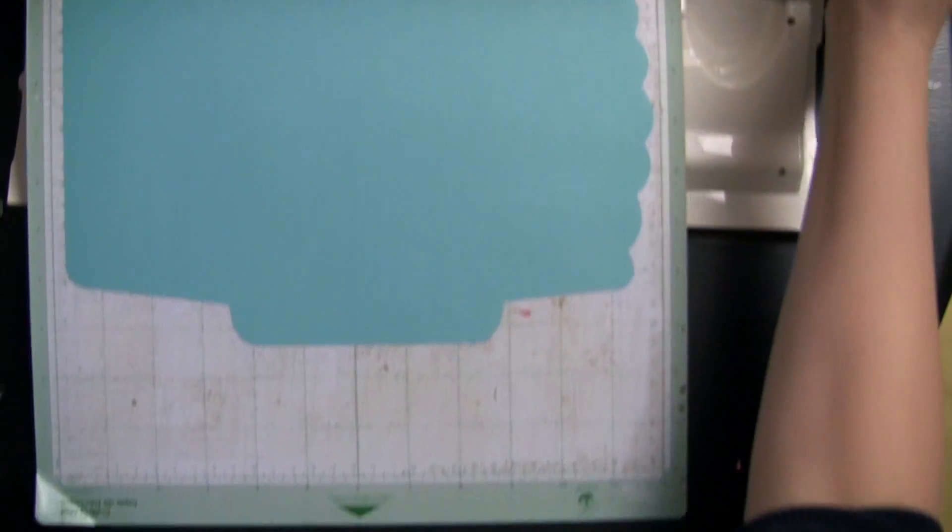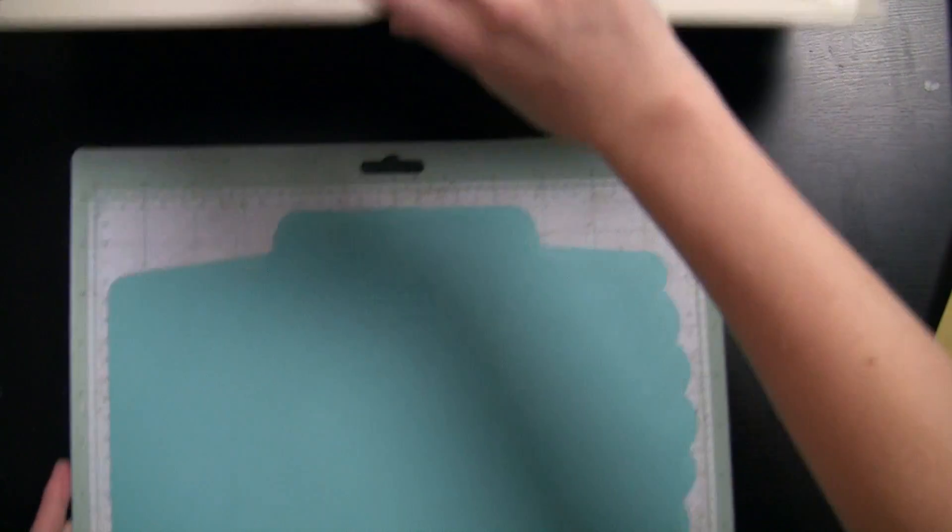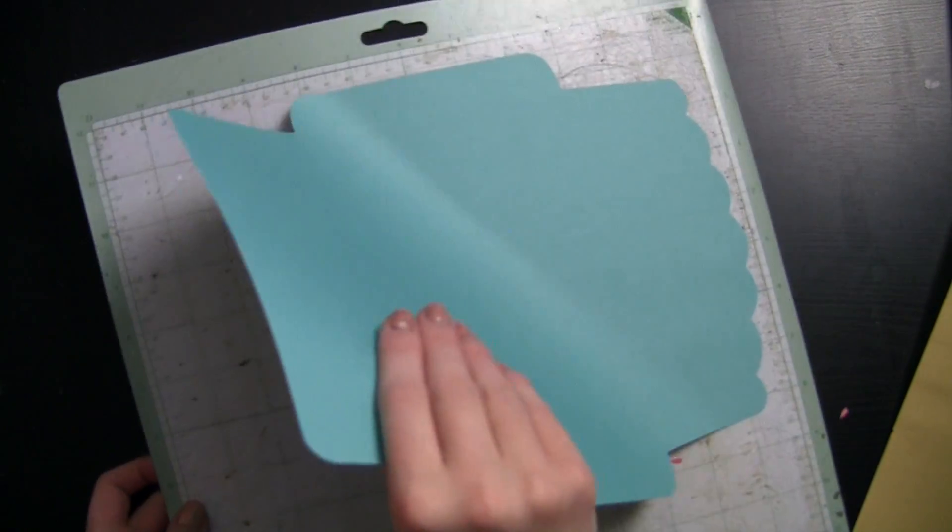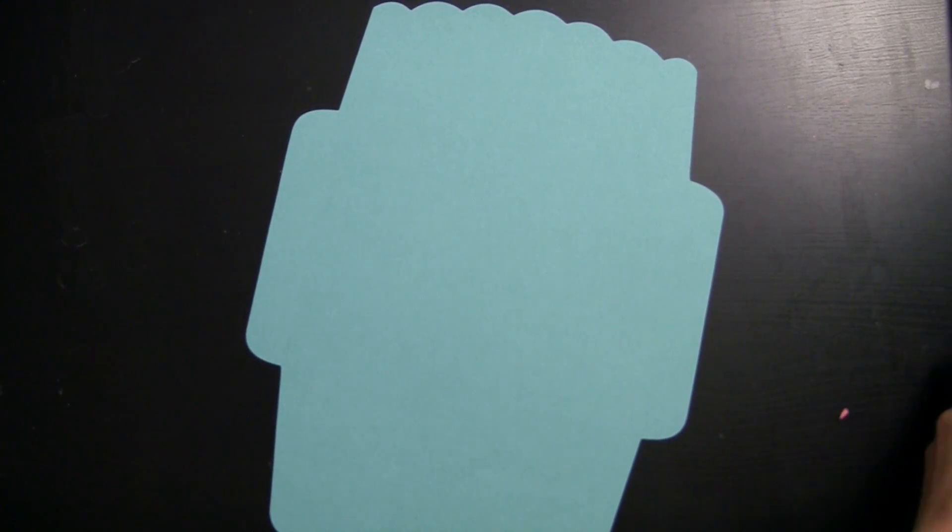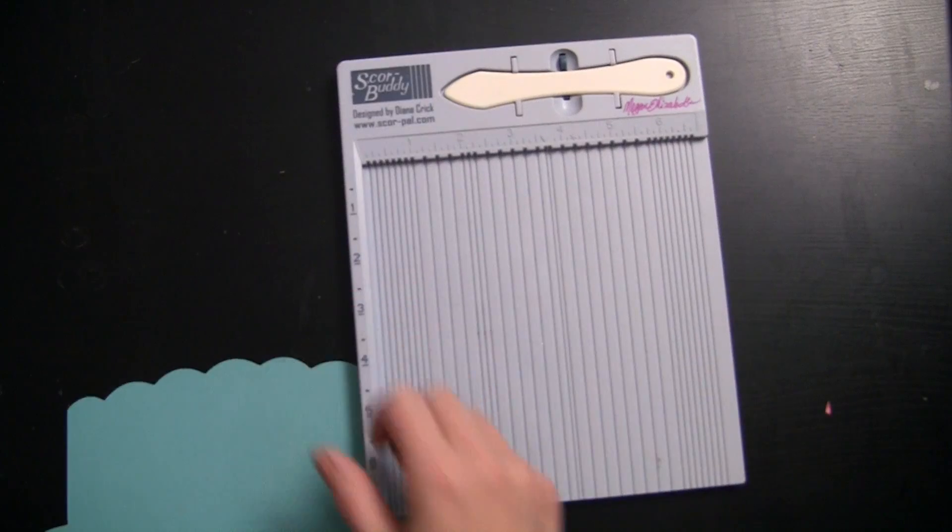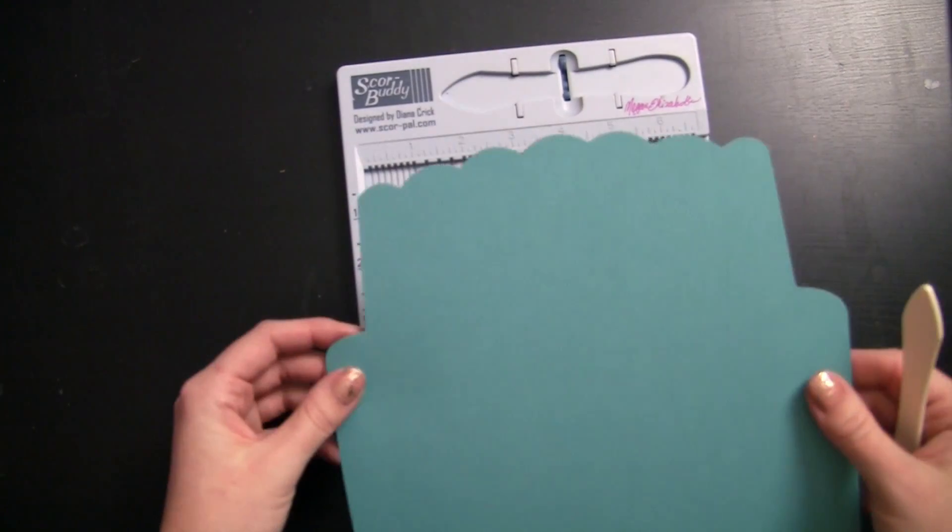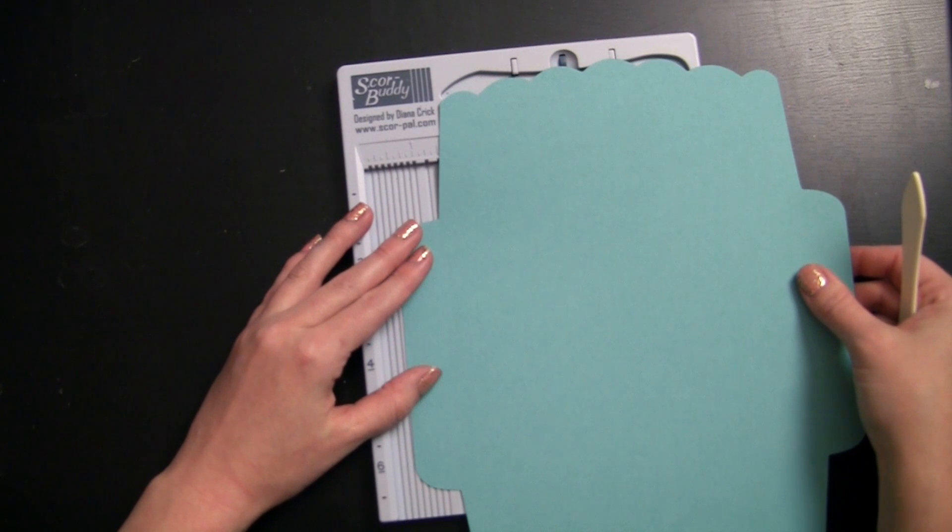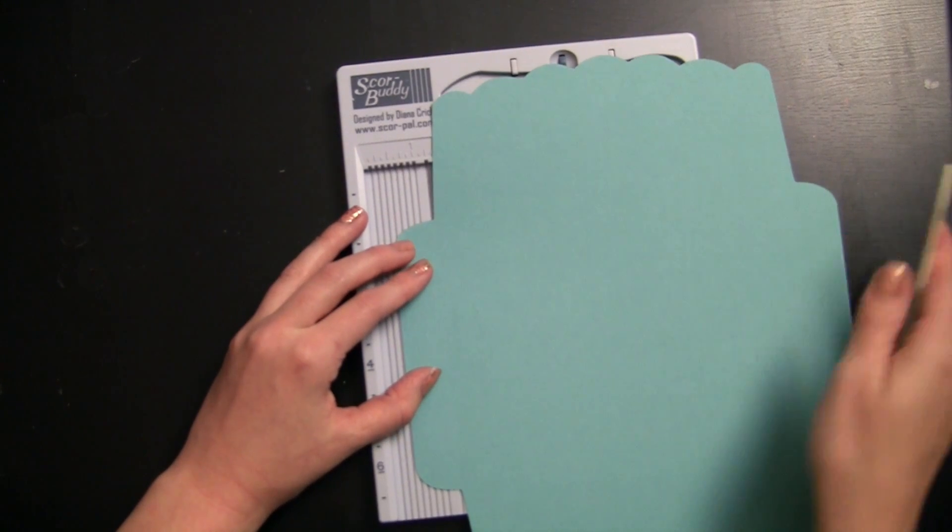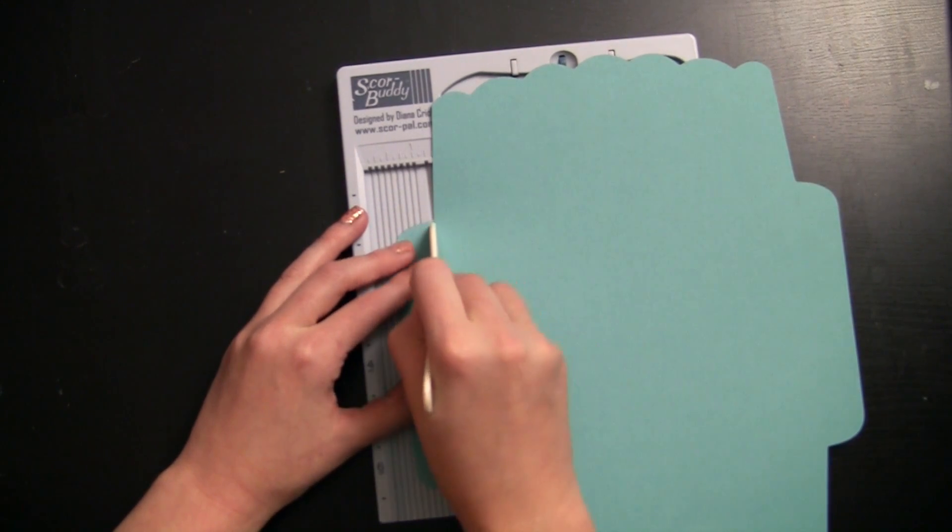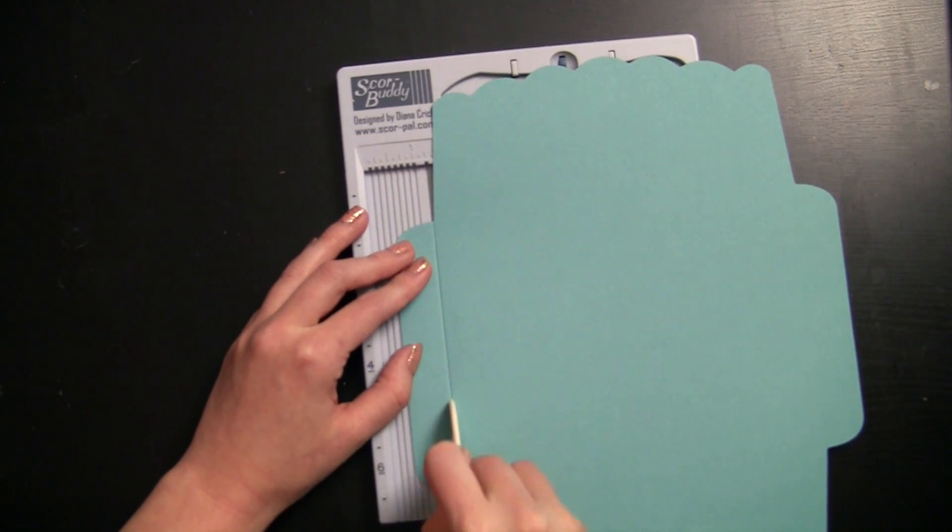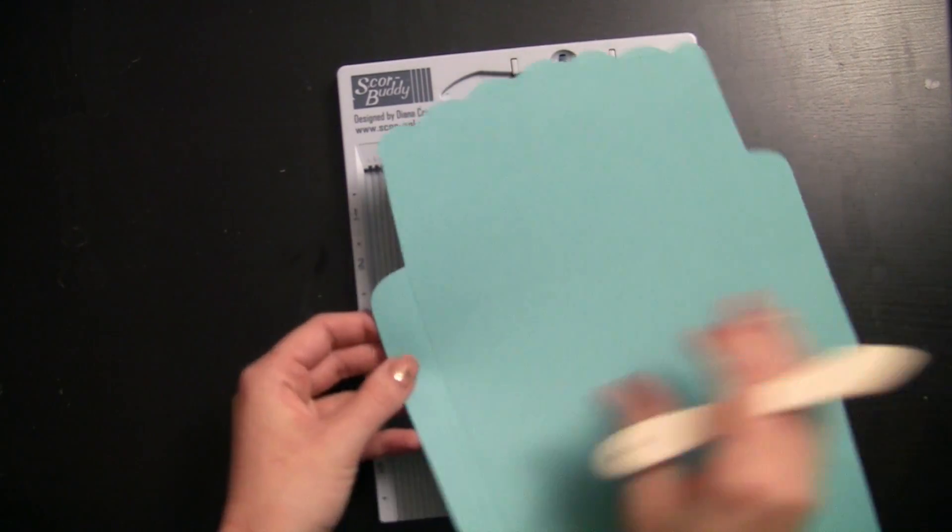I'm going to turn this off because I shouldn't need my Cricut anymore with what I'm doing today. There's my envelope. I'm going to grab my score buddy for this. And there's little tiny score marks already in there. You just kind of have to find where they're at, line them up. And you just score right on down.